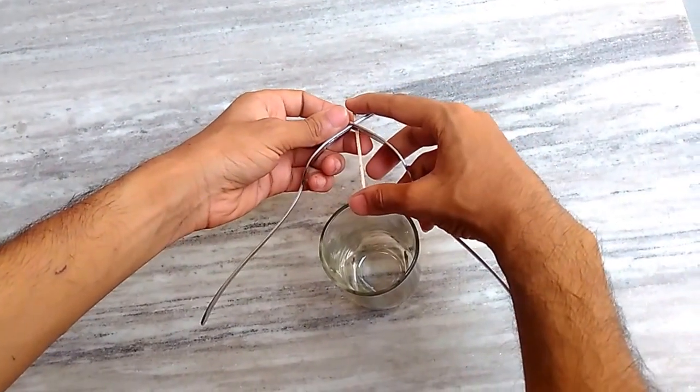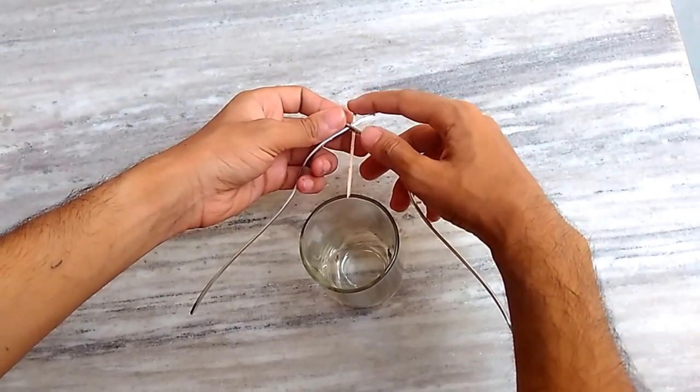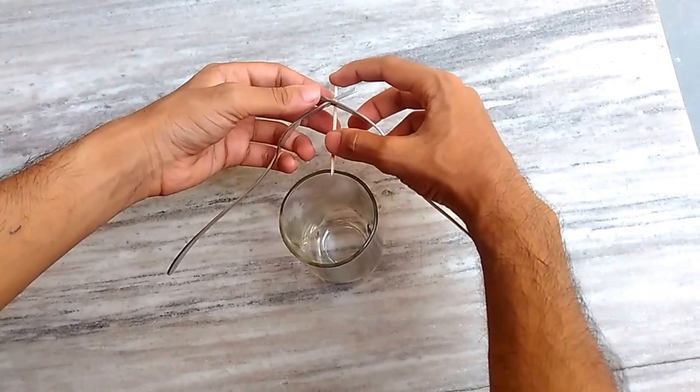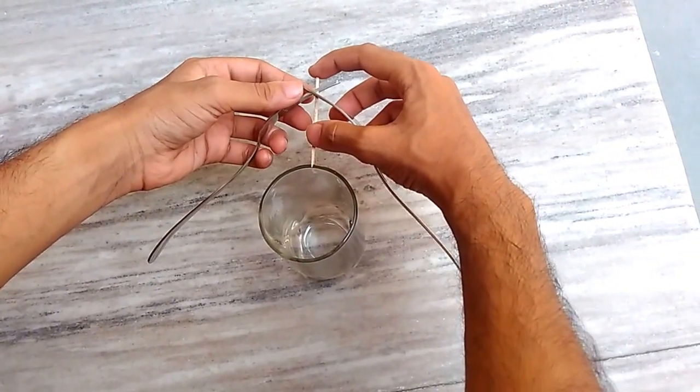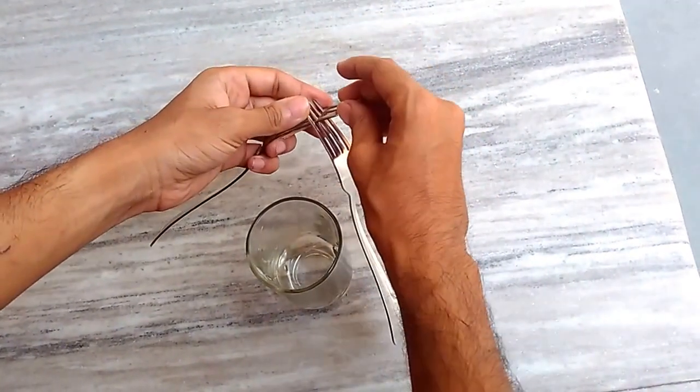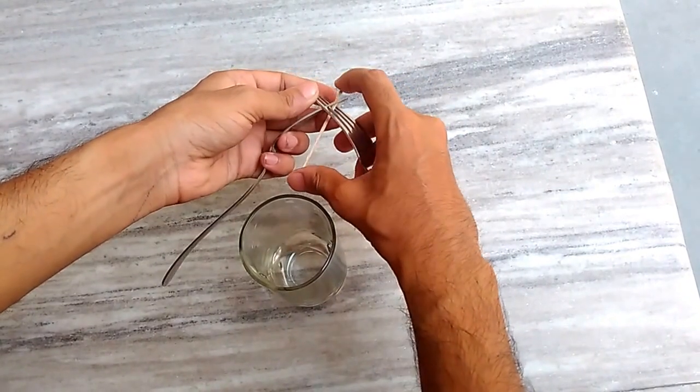We have to take care to maintain the center of gravity. The toothpick must be in the center and at the tip we will place it on the glass. This experiment requires a lot of practice. It won't go in one go. You cannot do this immediately, so it requires a lot of practice.